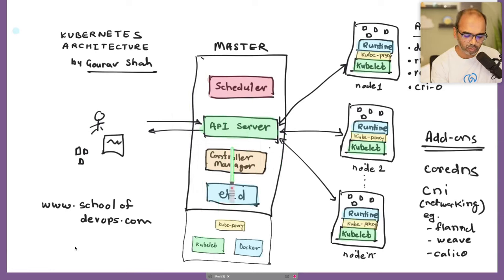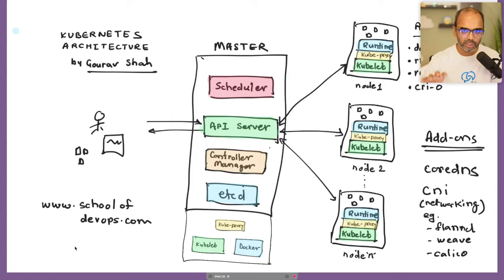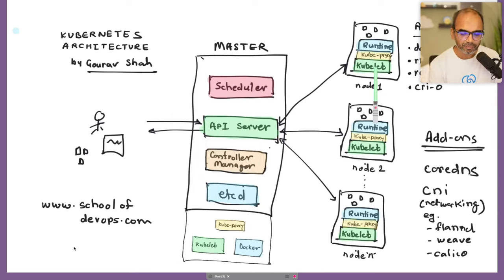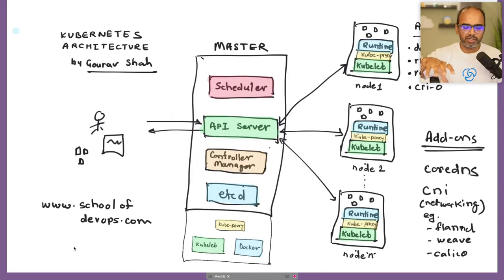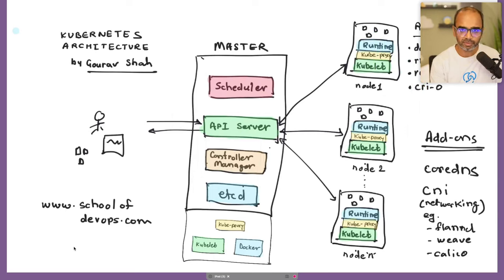The API call connects to the rest of the components — scheduler, etcd (which stores information), and the controller manager. Deployments and StatefulSets let you run a particular type of application in a certain way. On every node you have: kubelet — like a manager for that node's office — the runtime (Docker, containerd, or CRI-O) which does the actual work, and kube-proxy for service networking.